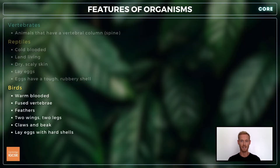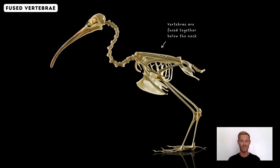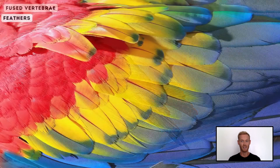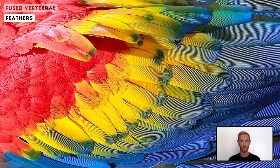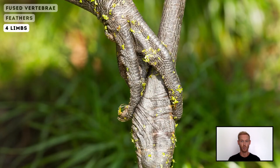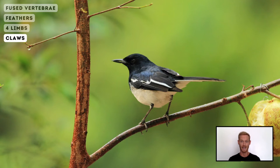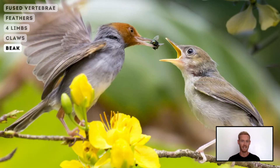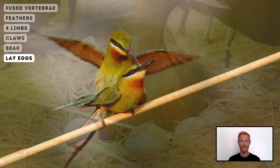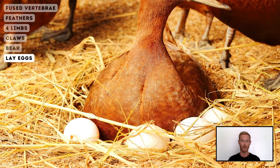Birds are warm-blooded, meaning their body temperature stays constant regardless of the outside temperature. Below the neck their vertebrae are fused together to form a rigid structure, which allows them to fly with more stability and control. Feathers are a defining characteristic of birds, serving multiple purposes such as insulation, protection and flight. They have two wings and two legs covered with scales, claws for perching and capturing prey, and a beak for feeding and manipulating objects. Birds produce eggs with hard shells that are fertilized internally and incubated by the mother until hatching.